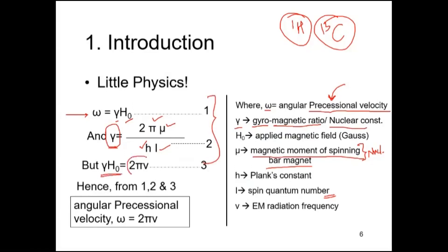If gamma times H0 equals 2π times nu, where nu is the electromagnetic radiation frequency, absorption will take place only when omega equals 2π nu. So combining the first and third equations, omega equals 2π nu, which is the angular precessional velocity.